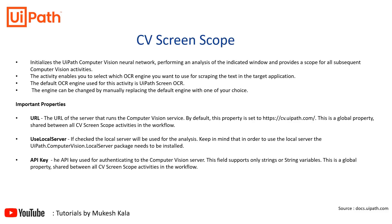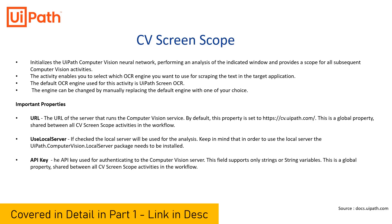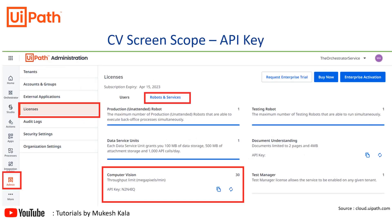Whenever we do any automation with computer vision activities, we require a scope called the CV Screen Scope. This initializes the UiPath computer vision neural network and performs analytics based on a certain set of technologies. To use a CV Screen Scope, we need three things: the URL, the local server, and the API key. The API key is available from cloud.uipath.com — go to Admin, Licenses, Robot and Services, and simply get the computer vision key.